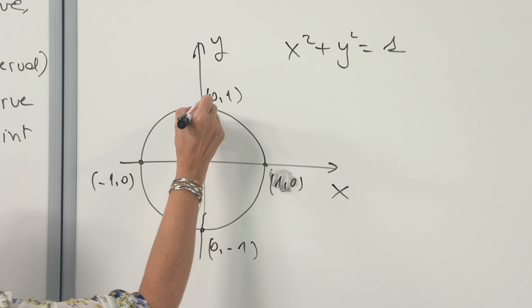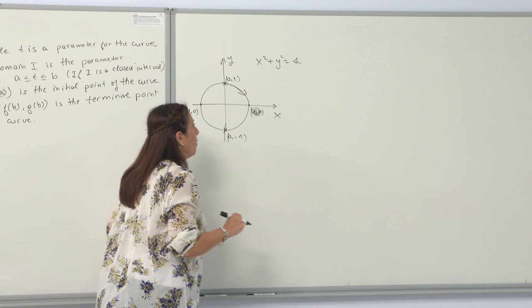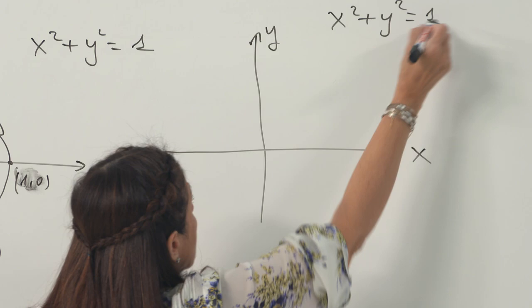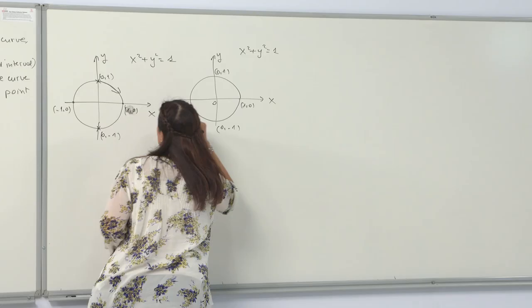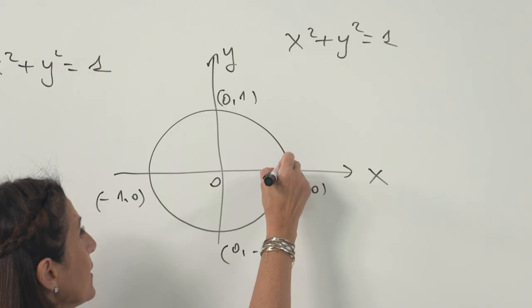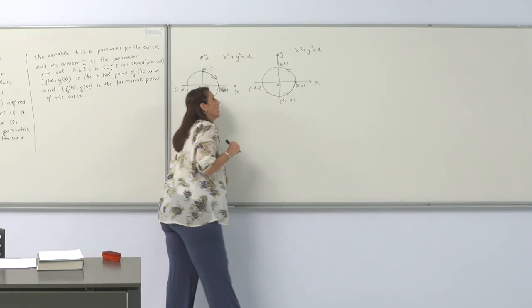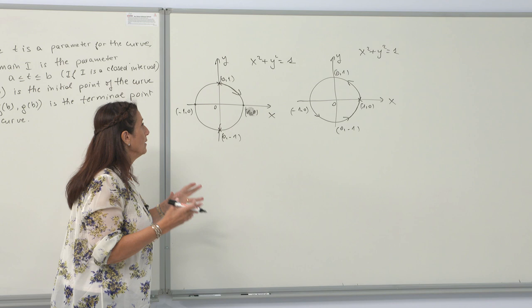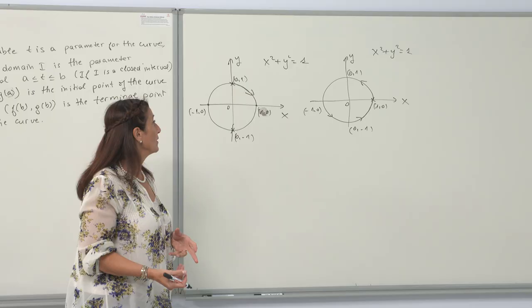I have a particle which begins from one point, goes in the clockwise sense, and ends up at another point. On the same circle, I have another motion described by the same unit circle equation. But here the particle begins from a different point, goes counterclockwise, makes a full turn, and comes back to the beginning point. These two different motions cannot be explained by functions in Cartesian coordinates alone — that's why we need parameters and a parameter interval.